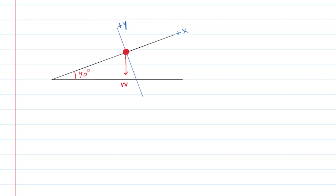We have the surface of the ramp pushing up on body A, acting perpendicular to the ramp surface — that is the normal force. We also have friction between the surface of the ramp and body A. We're going to assume the friction is pointing up the ramp in the positive x direction, and we will label that F.